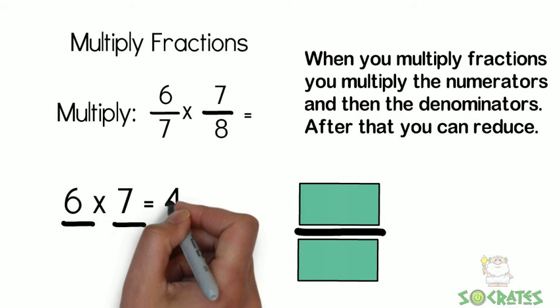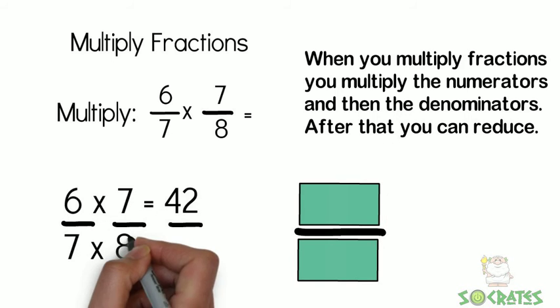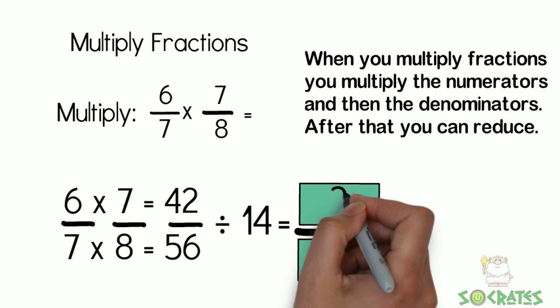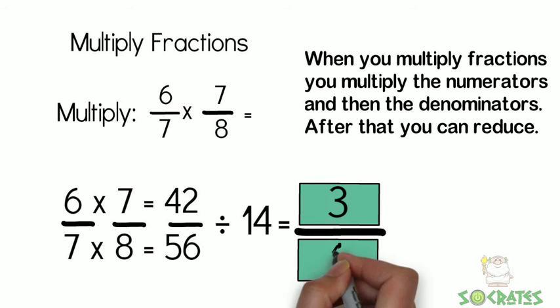So 6 times 7 is 42, and 7 times 8 is 56. We can divide both of those numbers evenly by 14, and that will give us 3 over 4, or 3 fourths.